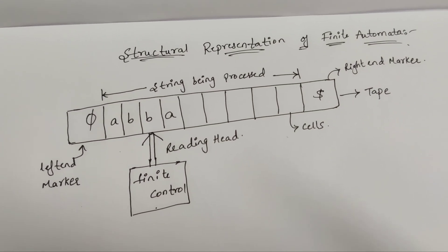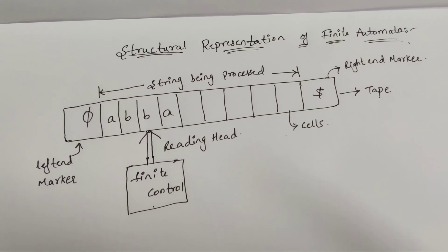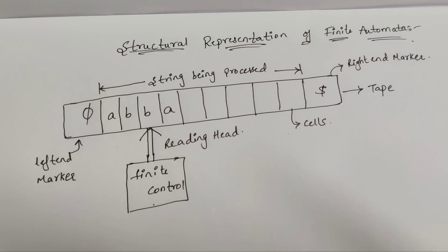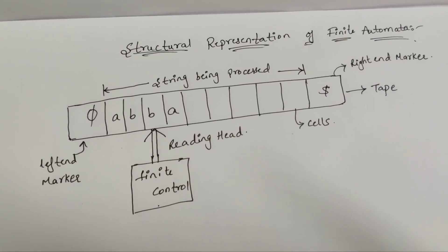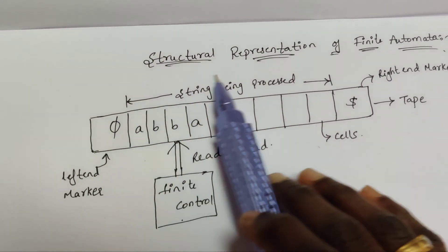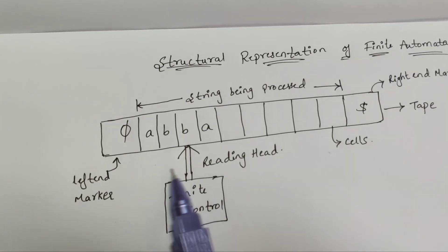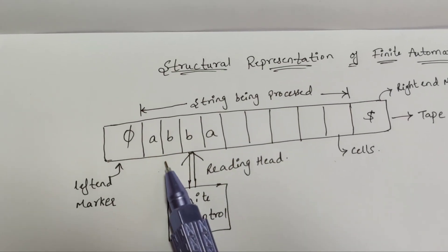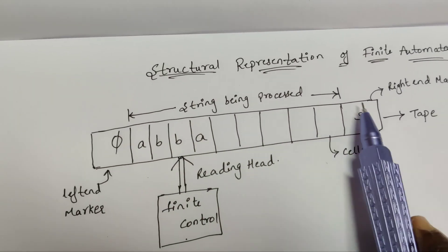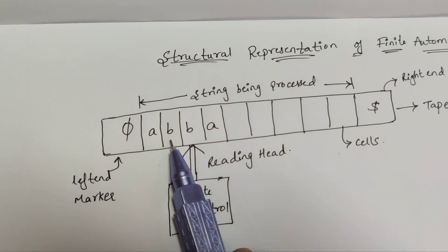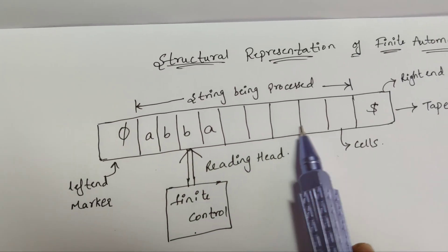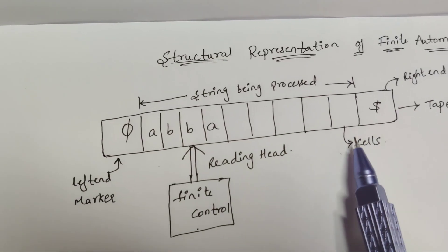Welcome to our channel. In today's video we are going to discuss the structural representation of finite automata. The structural representation of finite automata consists of an infinite length tape, which is divided into cells. These empty cells represent the infinite length tape.